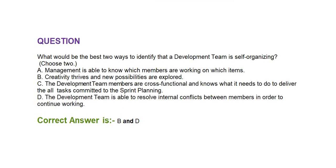Next question: what would be the best two ways to identify that a development team is self-organizing? Choose two options. Option A: management is able to know which members are working on which items. Option B: creativity thrives and new possibilities are explored. Option C: the development team members are cross-functional and know what they need to do to deliver all tasks committed to in sprint planning. Option D: the development team is able to resolve internal conflicts between members in order to continue working.